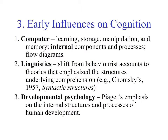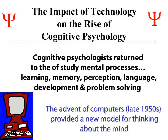Today we've advanced our thinking about an analogy with respect to the mind to not just the physical computer, but the types of software that might be on that computer. In linguistics, the shift from behaviorist accounts to theories that emphasize structure underlying comprehension was key — here again the influence of Chomsky in 1957, his book Syntactic Structures. In developmental psychology, Piaget emphasized cognitive structures — internal structures and processes with respect to human development. Technology, and the advent of the computer in the late 1950s, provided a new model for thinking about how the mind operated.